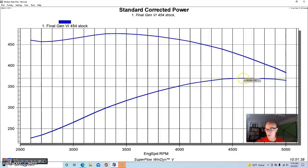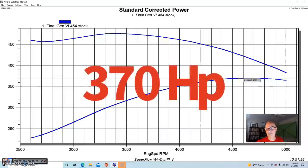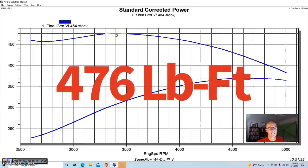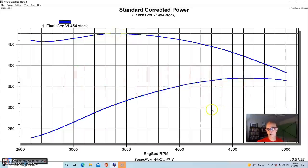And so equipped, our 454 produced 370 horsepower and 476 foot-pounds of torque.